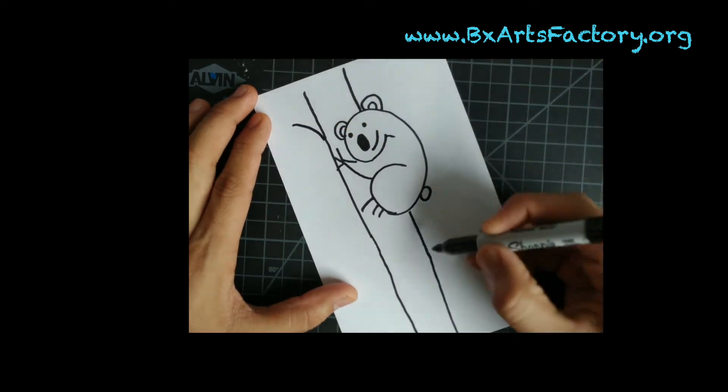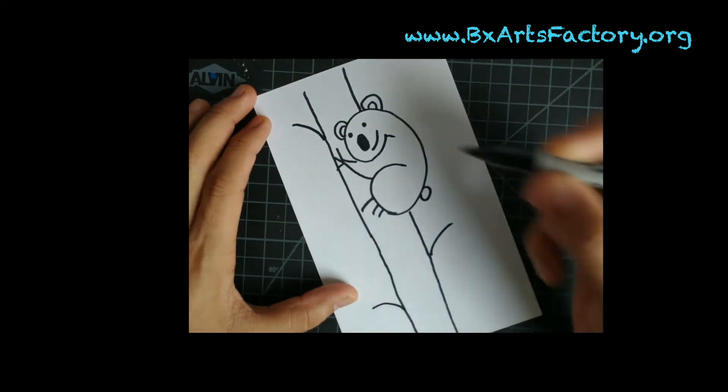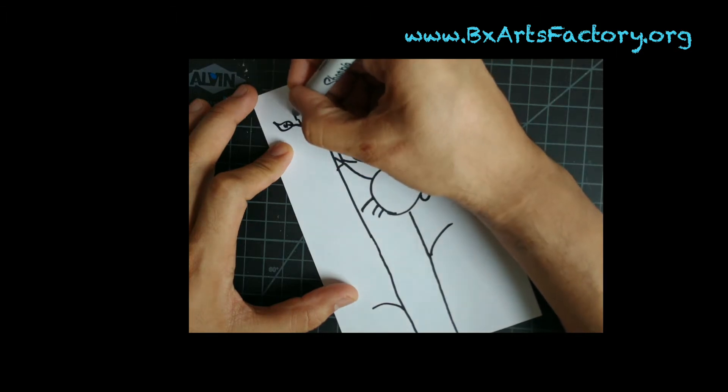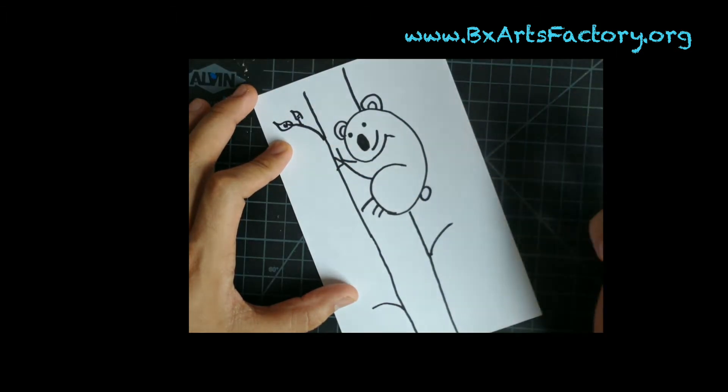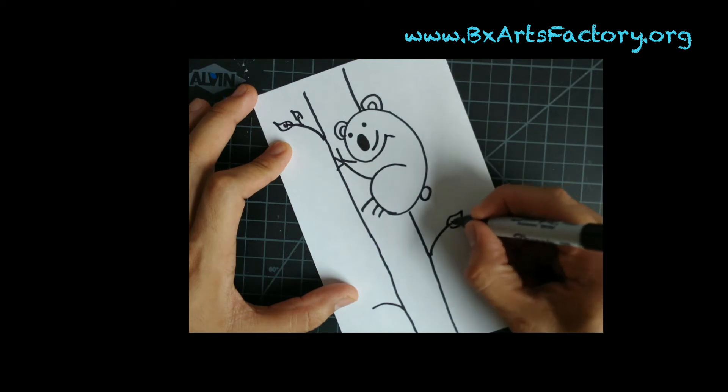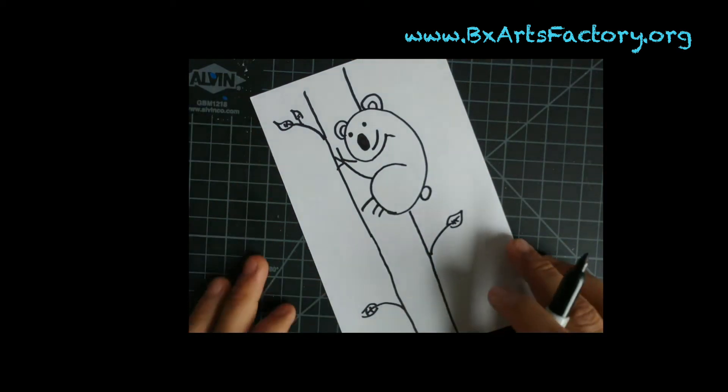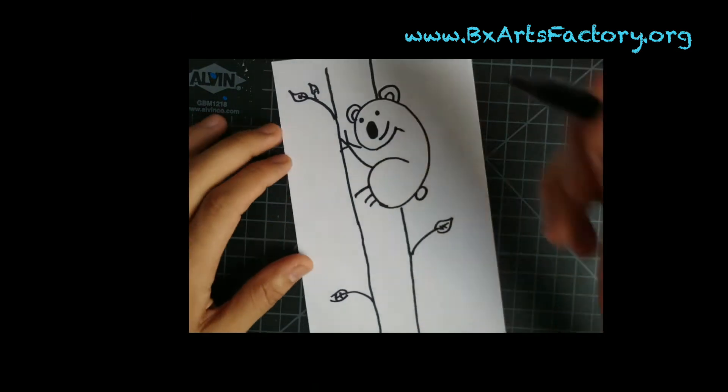Now we're gonna add some branches and we're gonna draw some leaves. Koala bears like to eat leaves, so we're gonna make sure they have some food in our drawing. There we go.